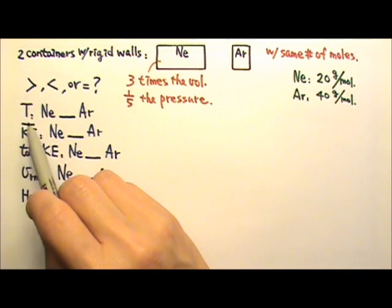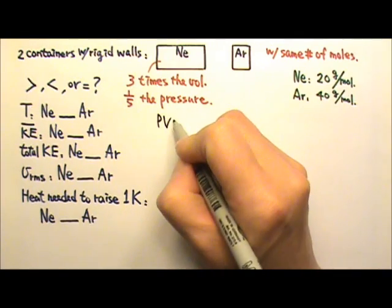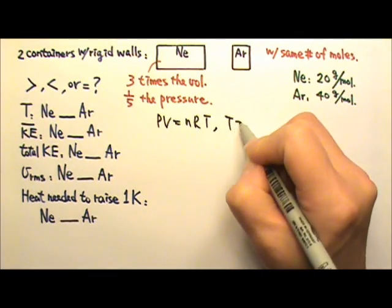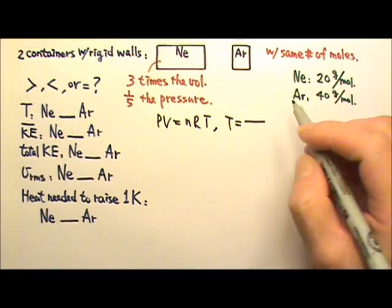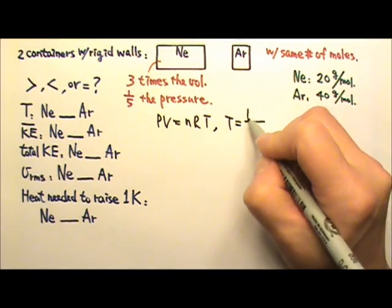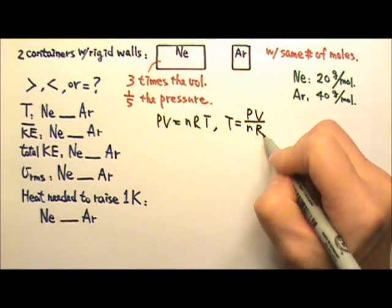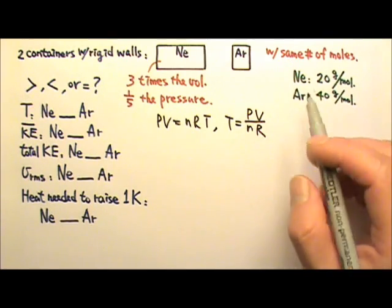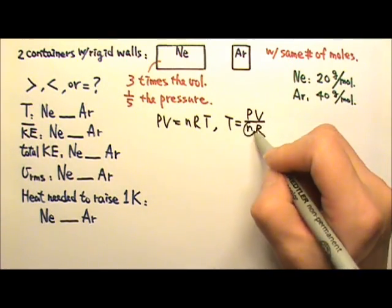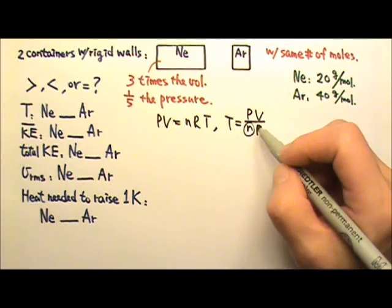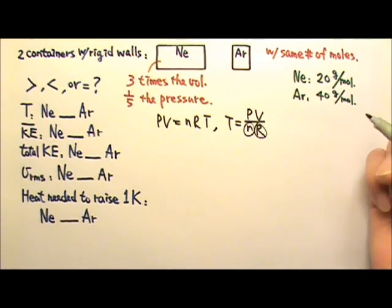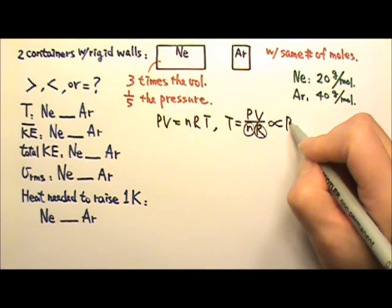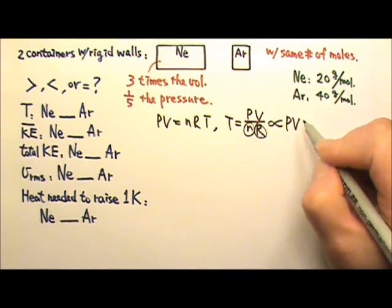For temperature, we can use PV = nRT and solve for T, which gives T = PV over nR. The two containers have the same number of moles, so n is the same. R, the gas constant, is also the same, so the temperature is proportional to P times V.